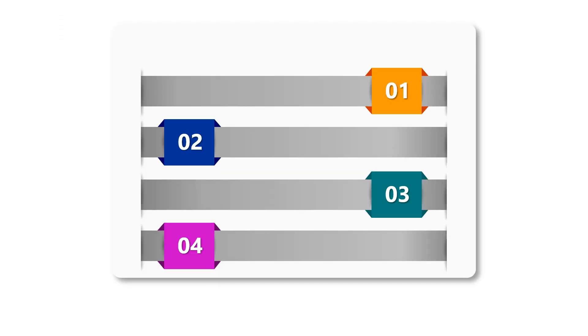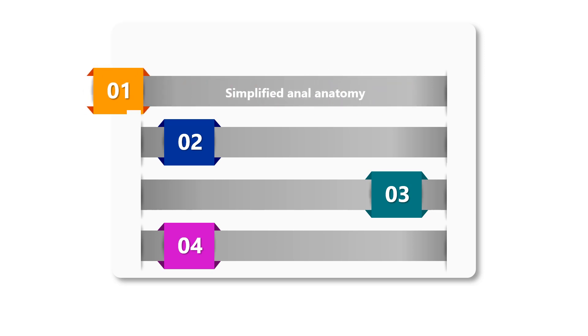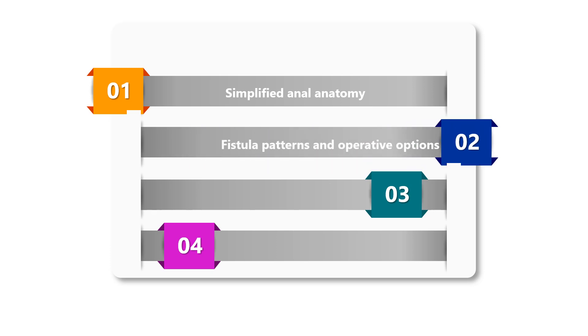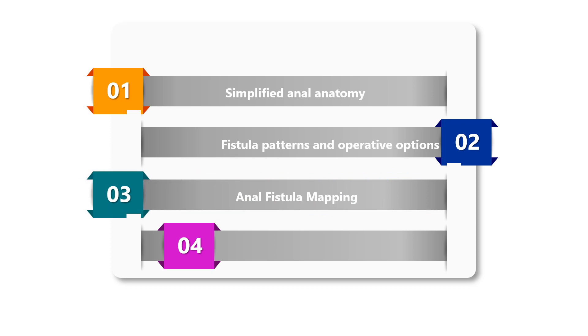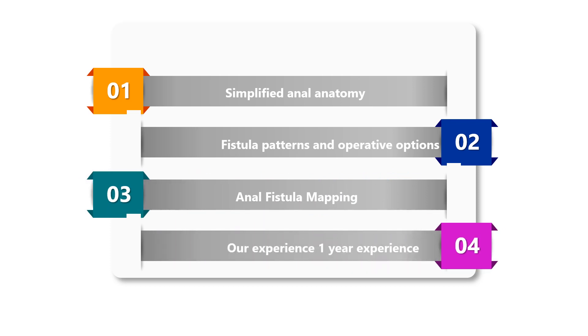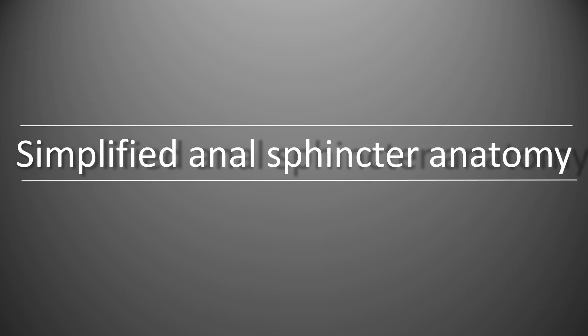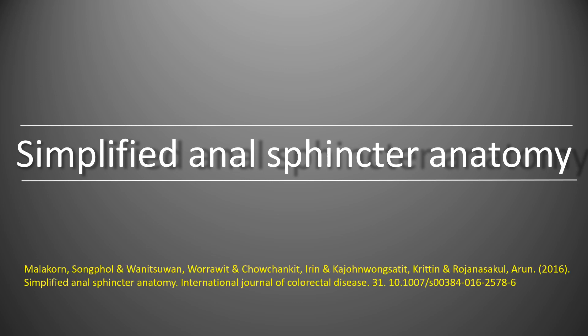The presentation on fistula will be divided into four parts. Initially we will talk about the simplified anatomy, fistula patterns and their operative options. In a later presentation we will see anal fistula mapping and our one year of experience. Simplified anal sphincter anatomy pertaining to fistula surgery has been published by Dr. Arun Rajnashukal and their group in the International Journal of Colorectal Disease, based on more than 100 cadaveric dissections over the last 10 years.